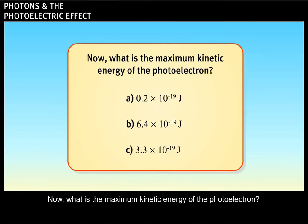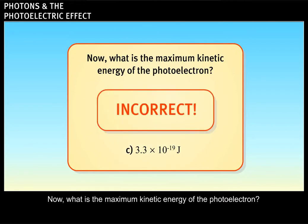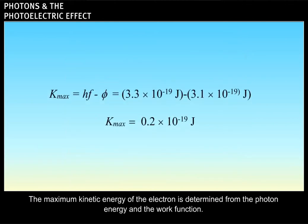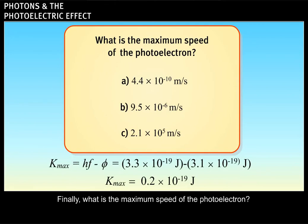Now, what is the maximum kinetic energy of the photoelectron? The maximum kinetic energy of the electron is determined from the photon energy and the work function. Finally, what is the maximum speed of the photoelectron? Correct.